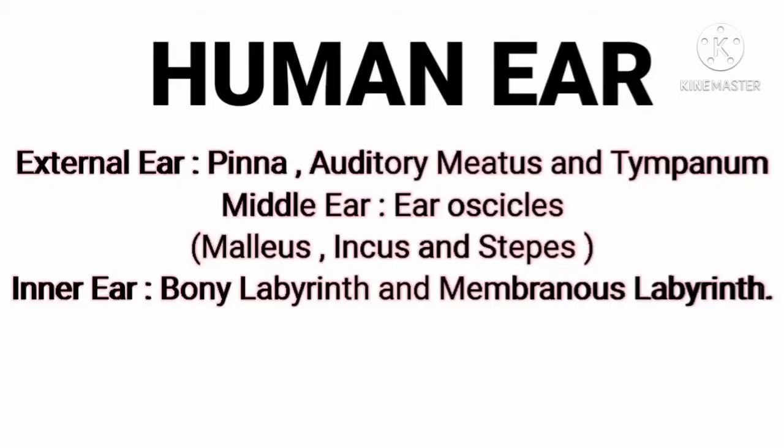The human ear is classified into three major parts: the external ear, the middle ear, and the inner ear. Pinna, auditory meatus, and tympanum belong to the external ear. The ear ossicles — malleus, incus, and stapes — belong to the middle ear.